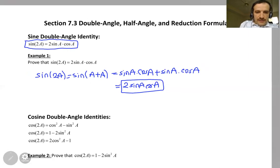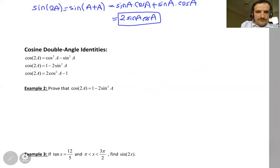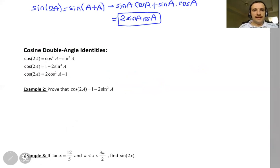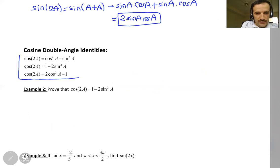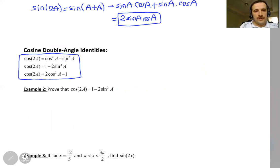What about cosine? Let's look at the cosine double angle identities. Cosine 2A can be rewritten in three forms. Cosine 2A is equal to cosine squared A minus sine squared A. Cosine 2A is equal to 1 minus 2 sine squared A. Or cosine 2A is equal to 2 cosine squared A minus 1.